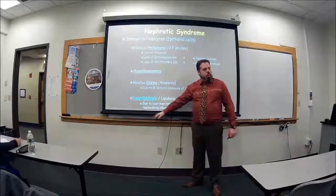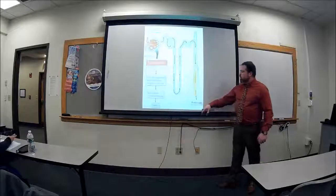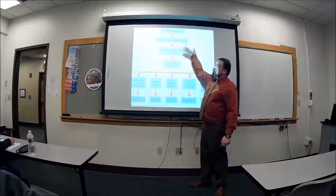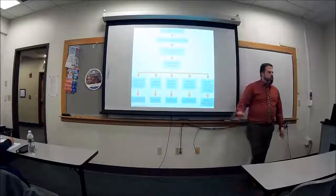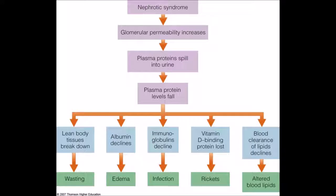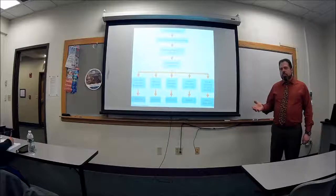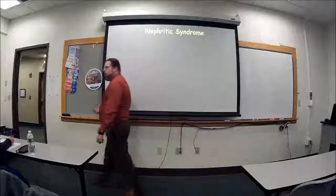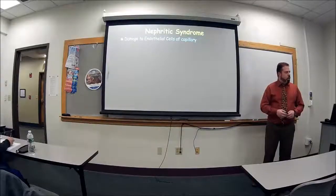So note all the different things that happen with nephrotic syndrome: permeability increases because the podocytes are destroyed, leading to proteinuria, edema, decreased immunoglobulin, and so forth. Now for nephritic syndrome — in this case it's the inner portion of the glomerulus that gets damaged: the endothelial cells, the wall of the capillaries — not the podocytes. When the endothelial cells are destroyed, big things like red blood cells can get out.